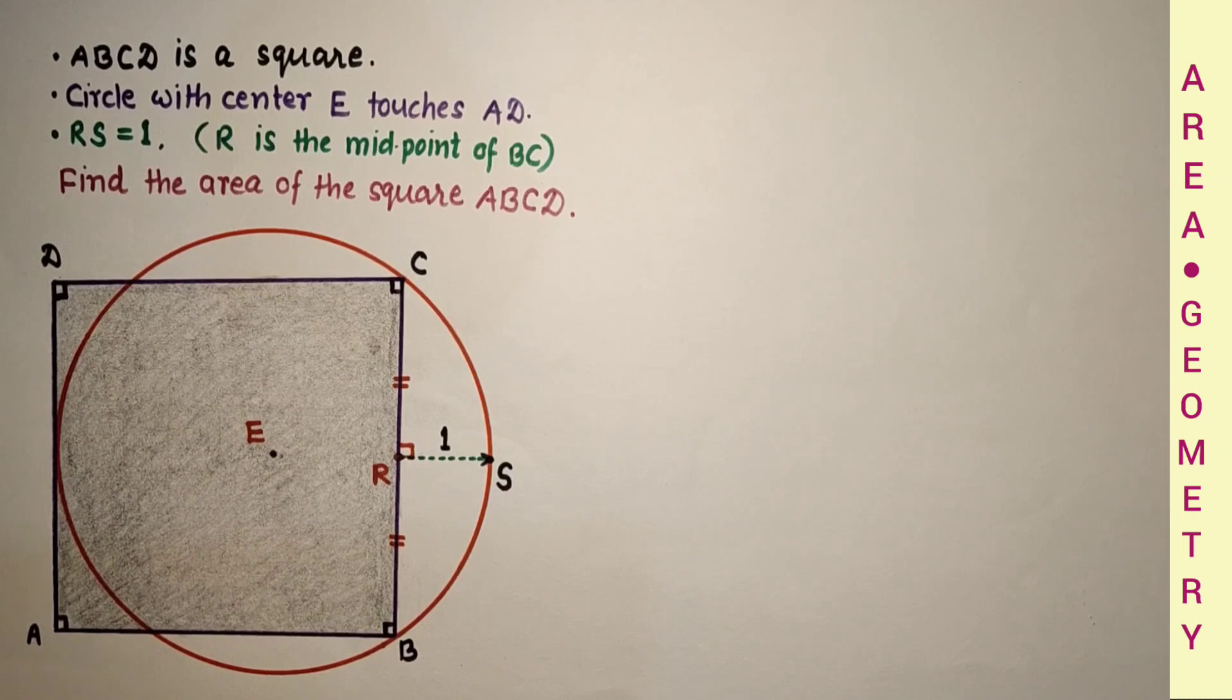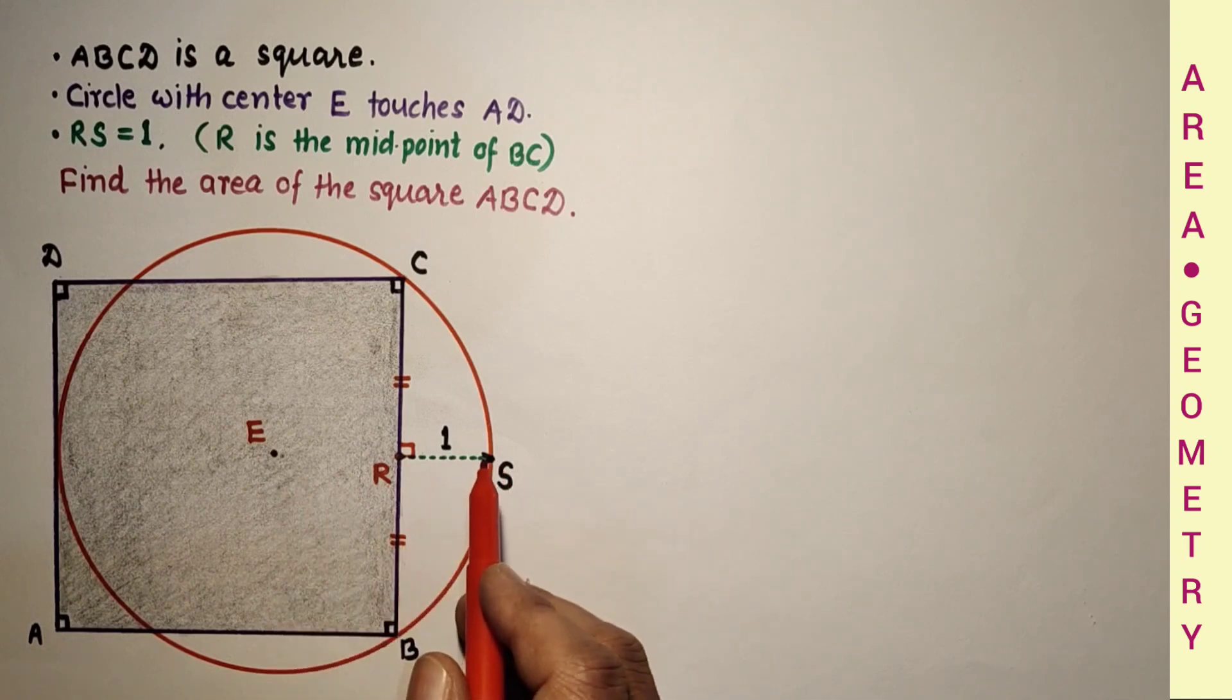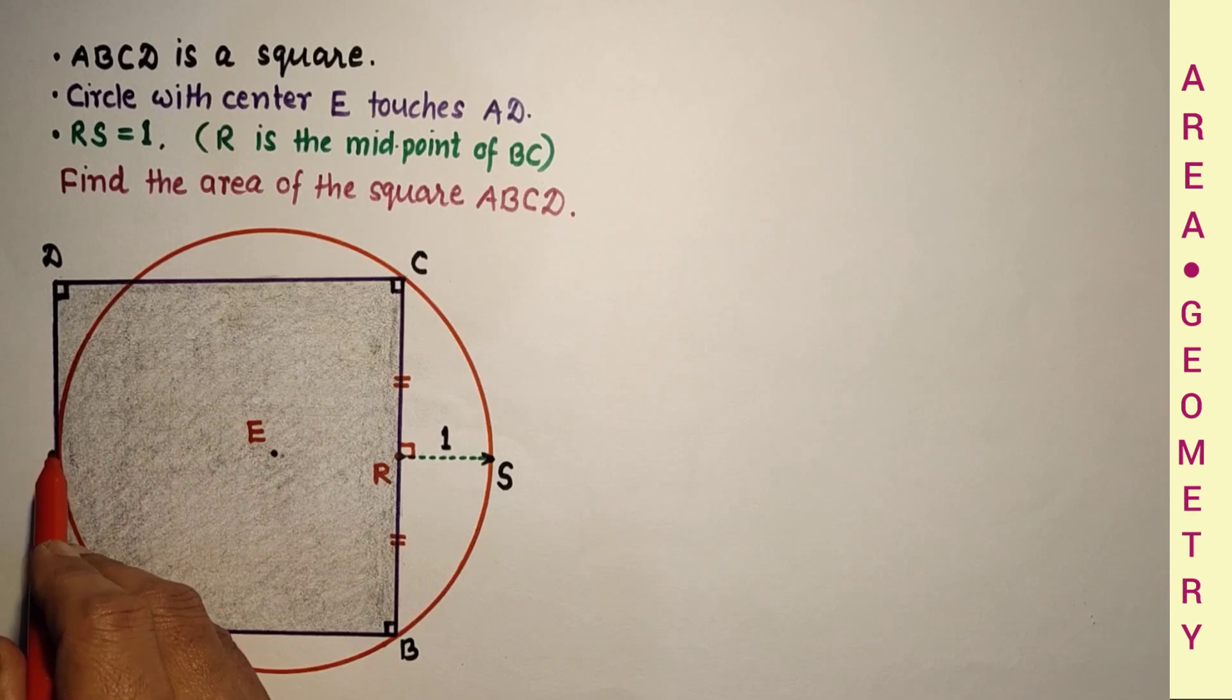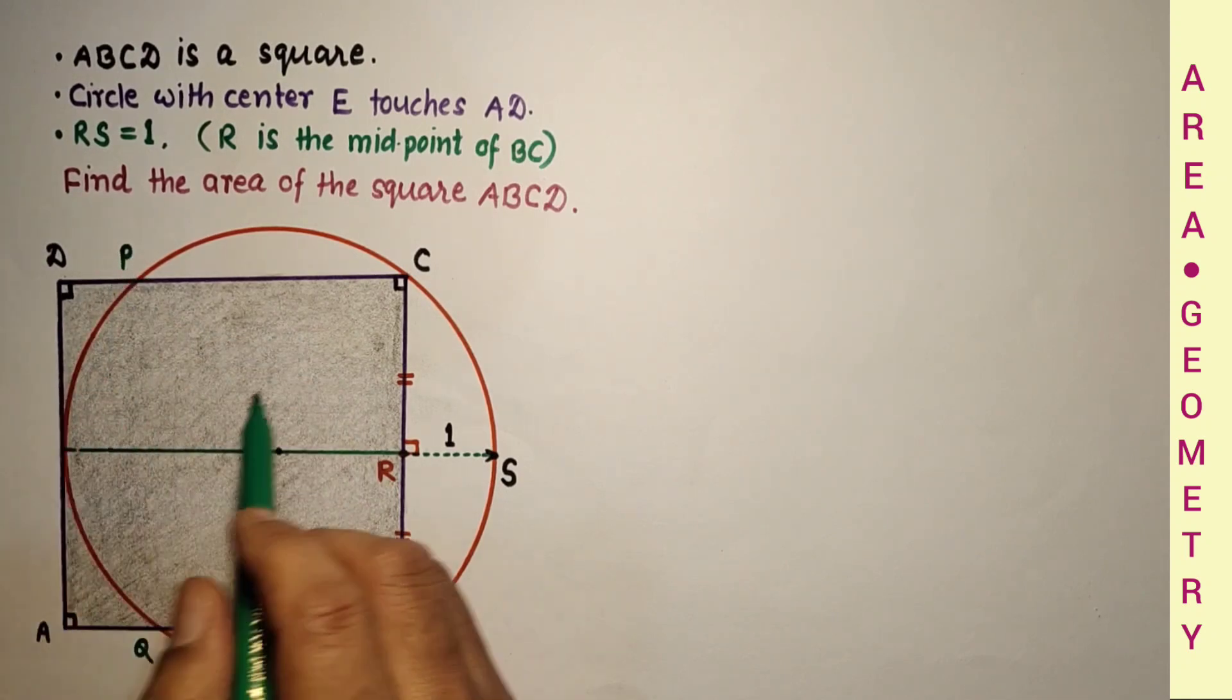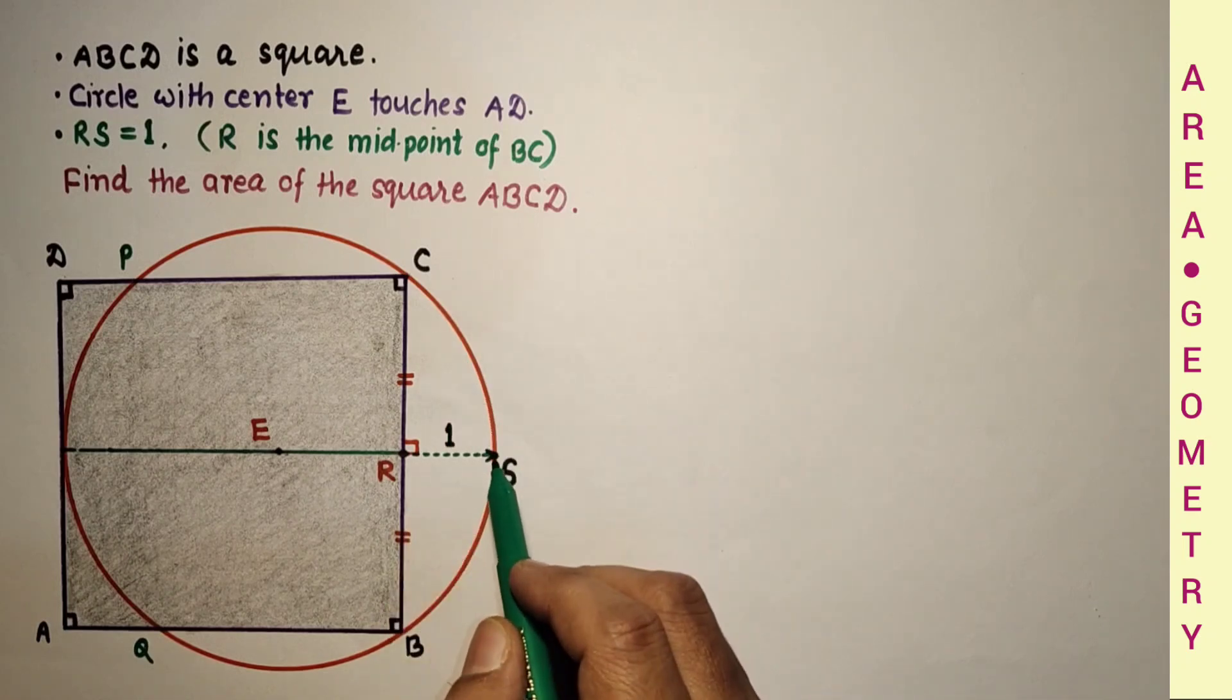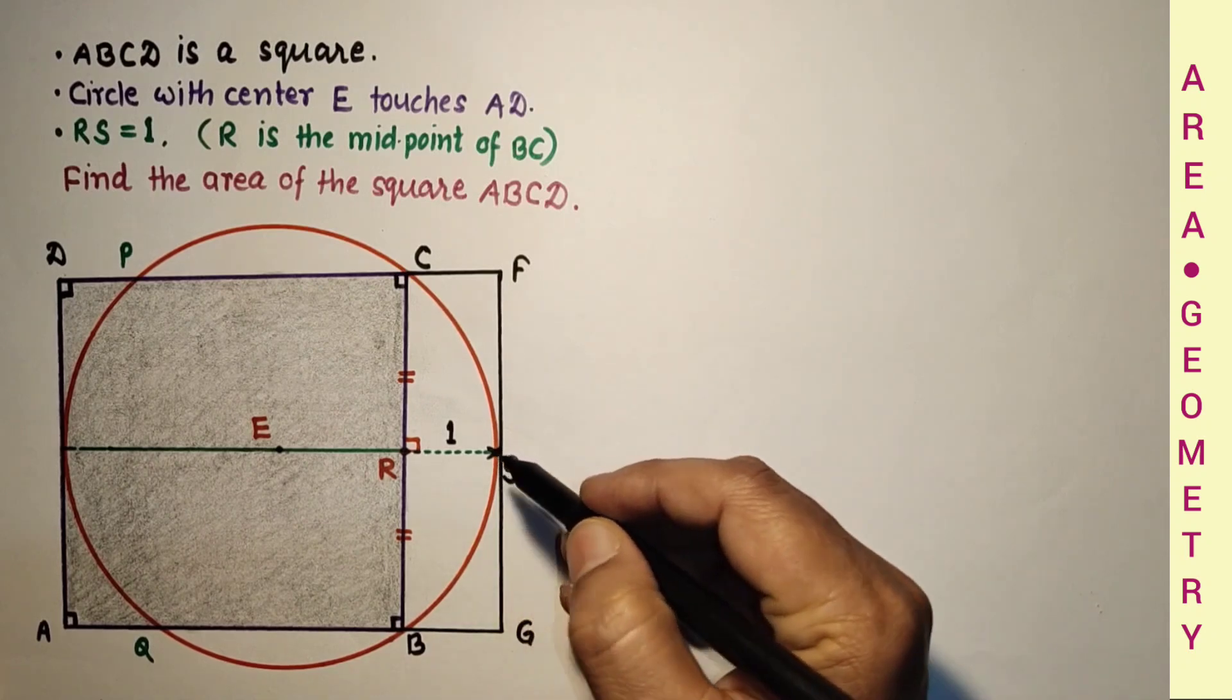This question is an average question. It's not so easy or so difficult. We have two methods to solve this problem. If we extend SR, it will pass through the center E and will meet at this point of contact. Let these two intersection points be P and Q. And if we draw a tangent from this point, FG is the tangent which touches the circle at point S.